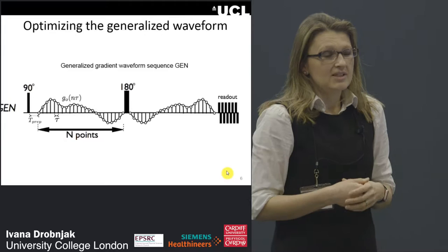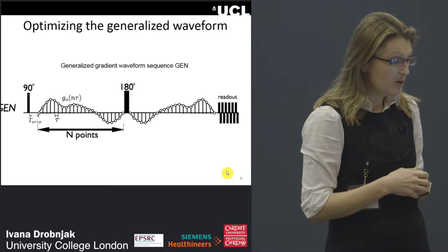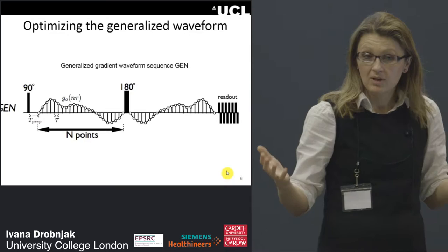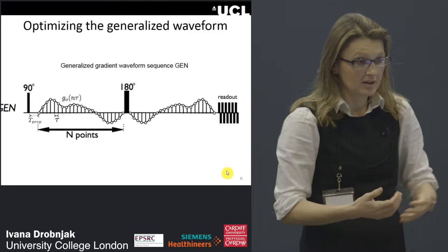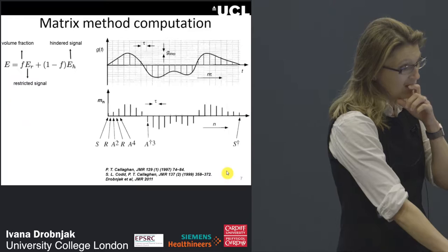When I started my first postdoc with Danny in 2009, he asked: what are the ideal gradient waveforms to measure microstructure parameters in diffusion MRI? My approach was to discretize the whole gradient waveform into individual points and optimize each point independently. This gave me maximum flexibility so I could get any kind of shape required for a particular application or optimization.